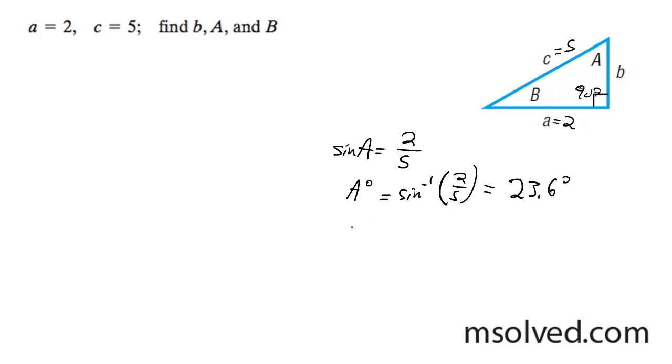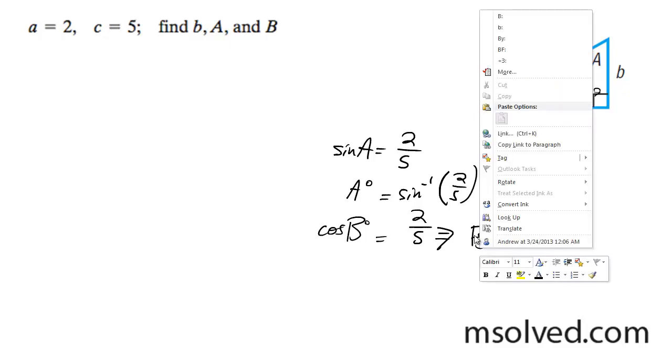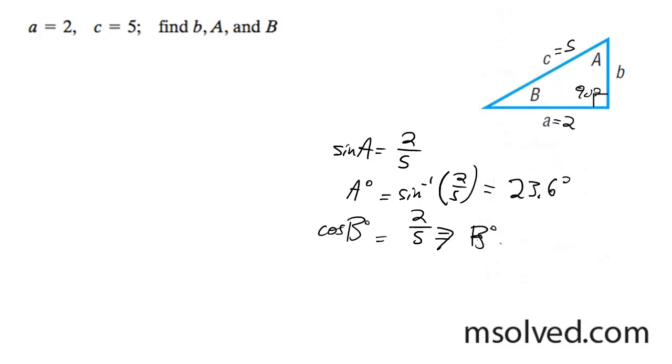Then for angle B, I'll use the cosine, which is 2 over 5. So B equals 66.4 degrees.